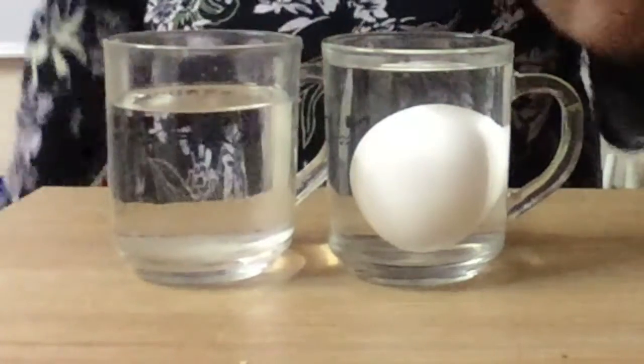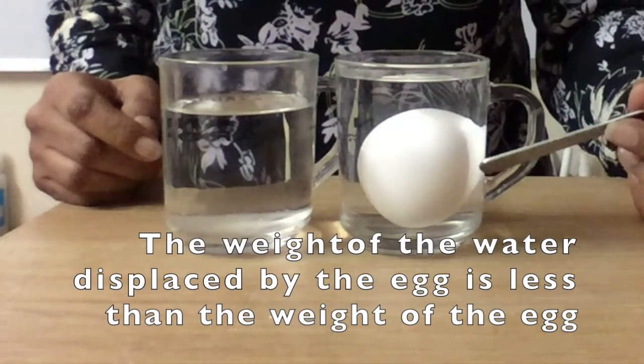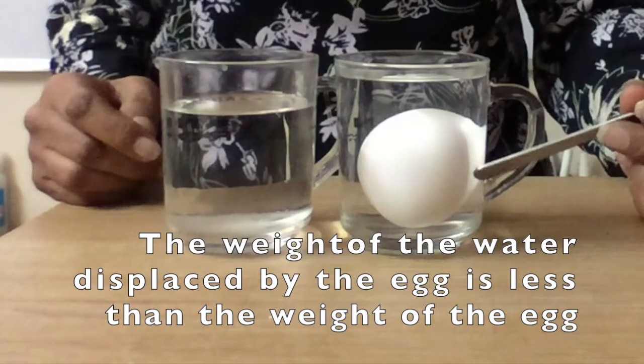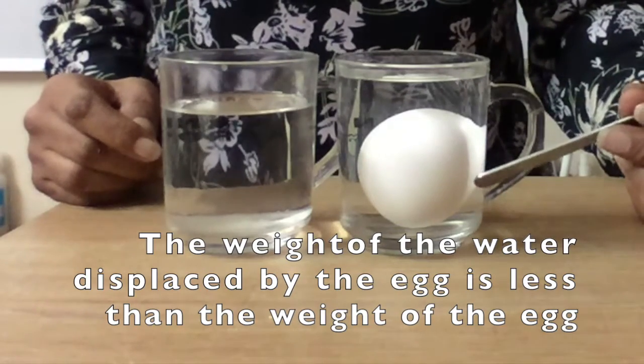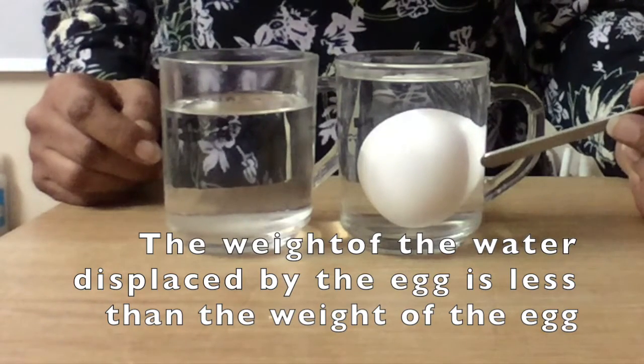Now why does it sink? Because the volume of the water that is displaced by the egg, displaced by the body, the weight of that water is less than the weight of the egg, the weight of the body.